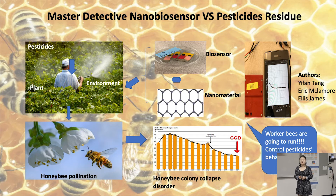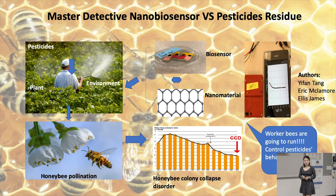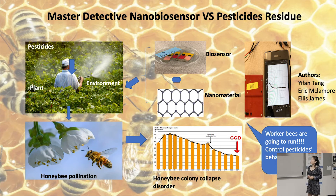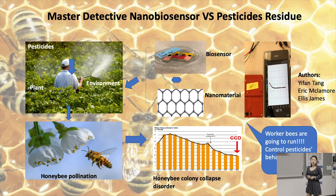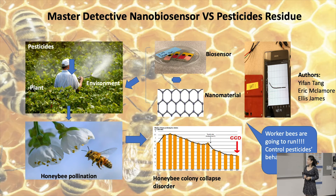Pesticides are used to control pests in agriculture and to cure pathogens in insects. But the residue will remain on plants and the environment, especially in the immediate collaborate, which will harm the insect's brain system. The honeybee absorbs this pesticide residue from plants and the environment, and then the brain gets affected, triggering the honeybee colony collapse disorder.